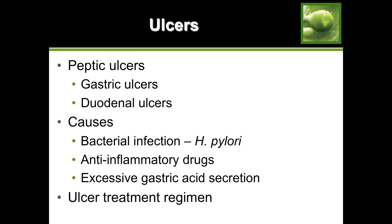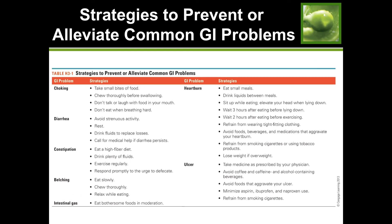Ulcers: in general they're called peptic ulcers. Gastric ulcers are in your stomach and duodenal ulcers are in your duodenum in the small intestine. Causes include bacterial infections such as H. pylori, overuse of anti-inflammatory drugs like NSAIDs such as Advil or ibuprofen, and excessive gastric acid secretion. Treatment may include medication or surgery if bad enough. A really bad gastric ulcer can cause you to vomit blood. Strategies to prevent or alleviate common GI problems largely involve a healthy lifestyle.